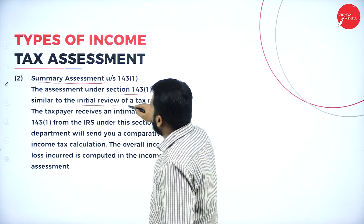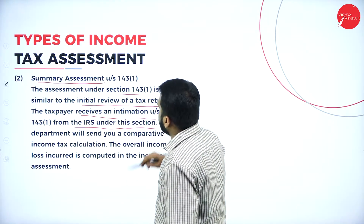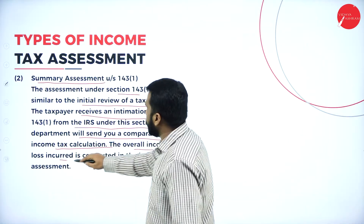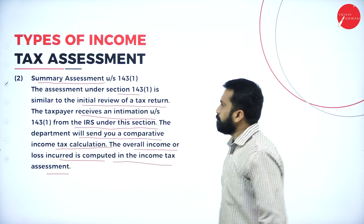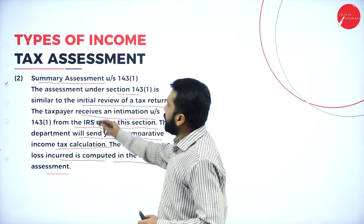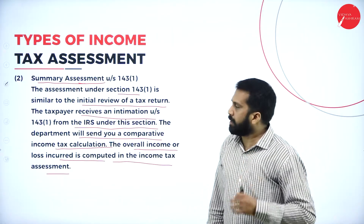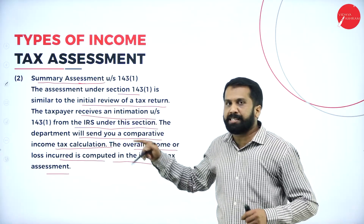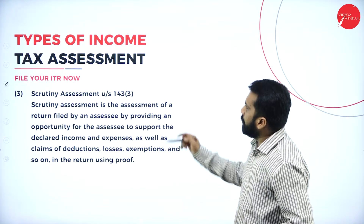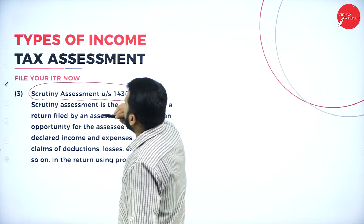Summary assessment is done under Section 143, similar to an initial review of a tax return. The taxpayer receives an intimation from the income tax department under this section. The department will send you a comparative income tax calculation — the overall income or loss incurred is computed based on whatever income you have uploaded. Based on that, the summary assessment is done by the income tax office and they will send you how much tax you are supposed to pay.